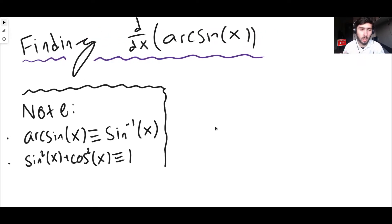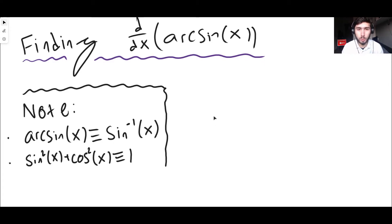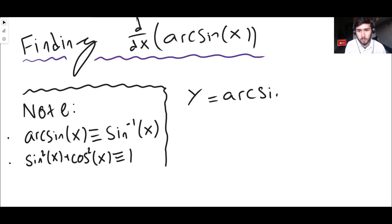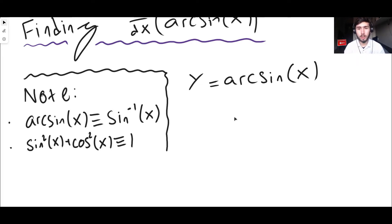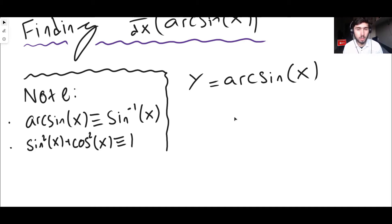The only other thing we need to know before we begin is the trig identity: sin²x + cos²x ≡ 1, always. That's it in terms of identities. So let's begin. We're looking at y = arcsin x and we want to find dy/dx. We don't know how to differentiate arcsin x directly, so we ask: what do we know how to differentiate that's similar? Well, we know how to differentiate sine x.